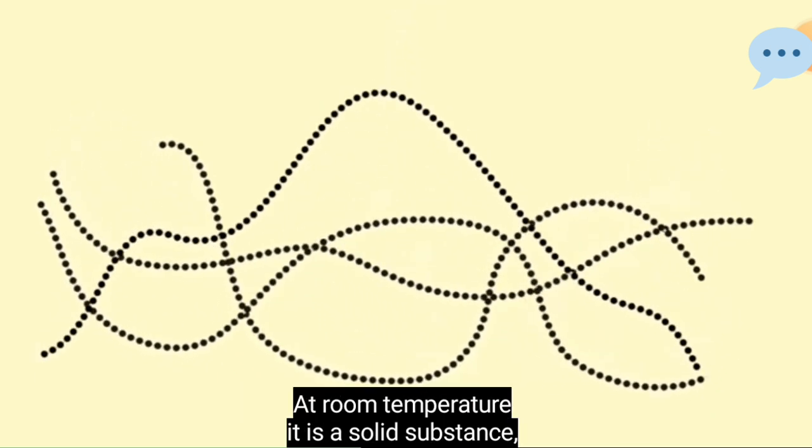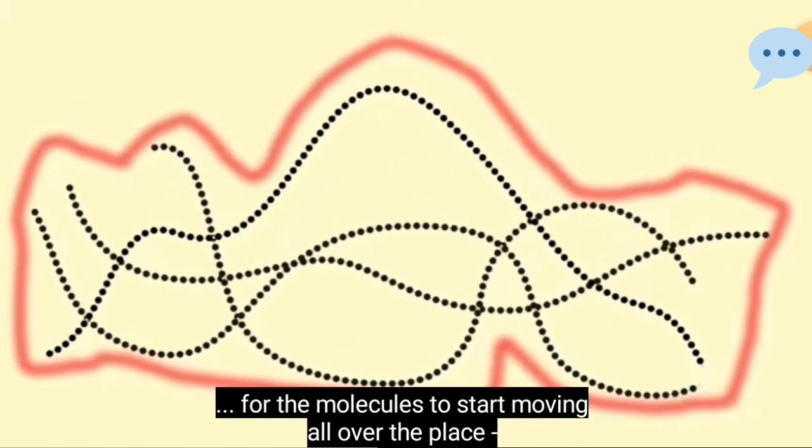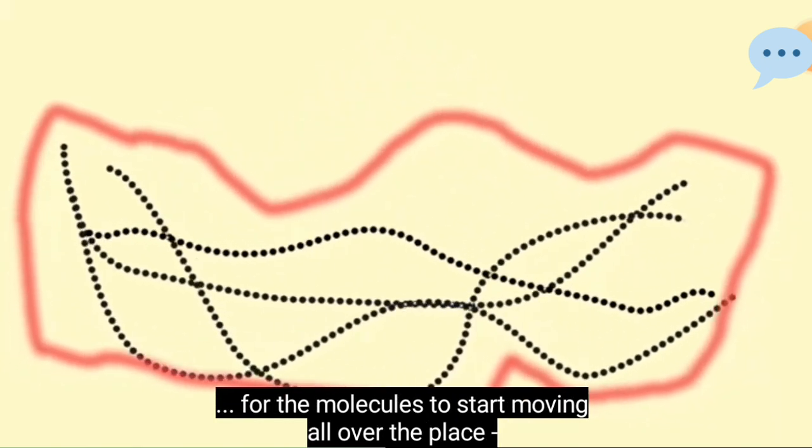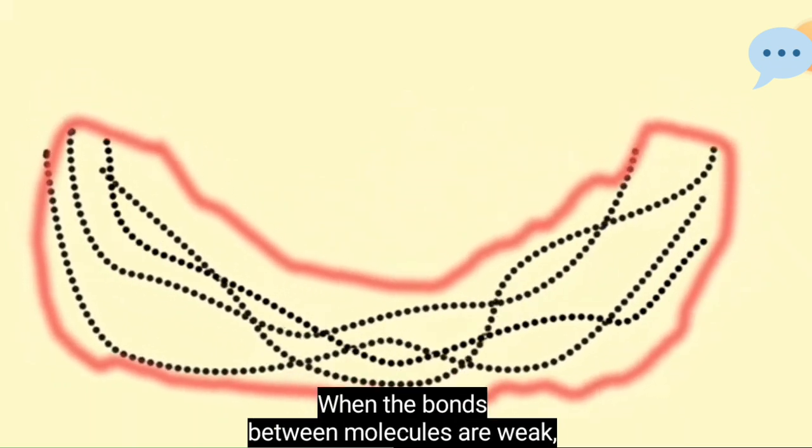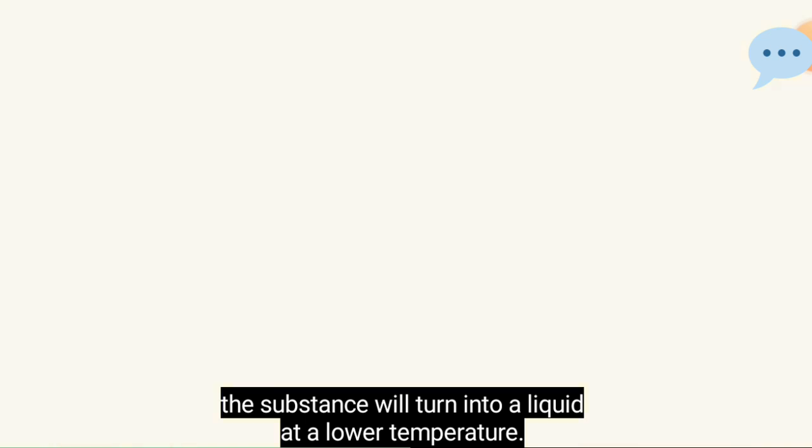At room temperature, it is a solid substance, but it's enough to heat it just a little for the molecules to start moving all over the place. The plastic has melted. When the bonds between the molecules are weak, the substance will turn into a liquid at a lower temperature.